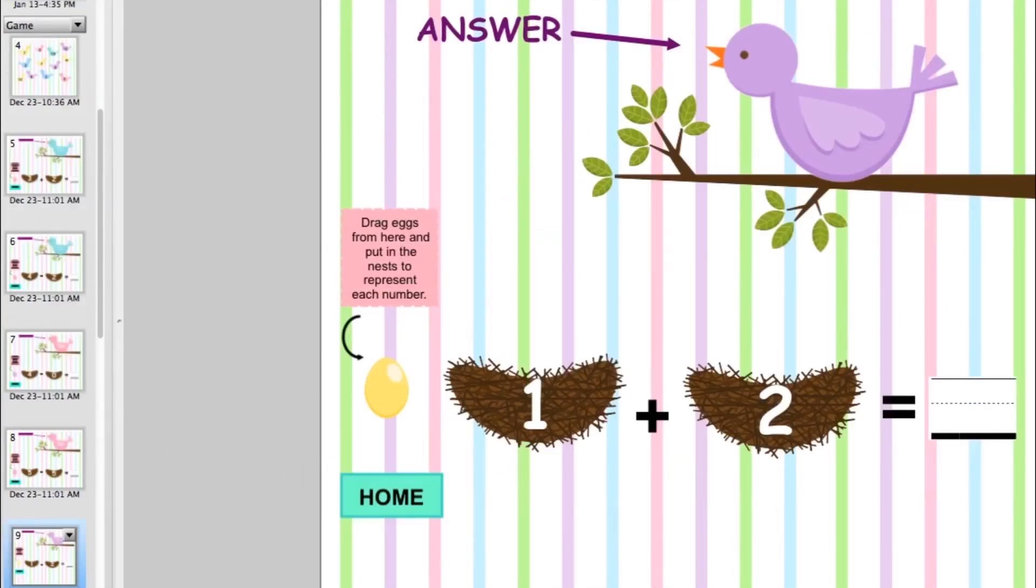In this add and subtract birdies game, students will touch a number bird. They will touch an egg and drag it into the nest according to the number on the nest and they add up those eggs.